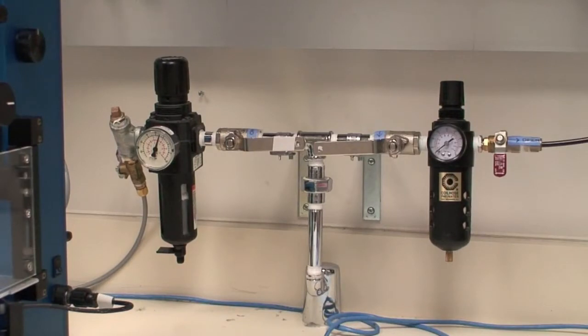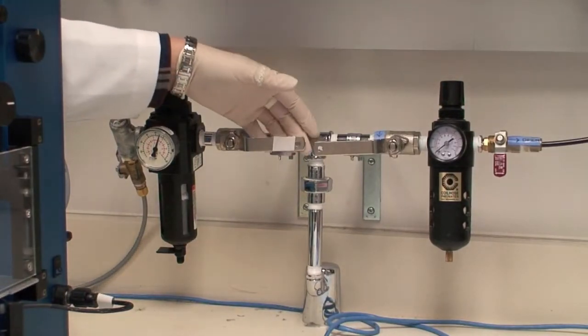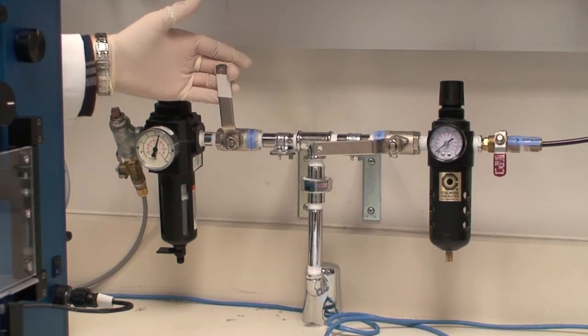Meanwhile, open both gas valves to provide pressure to apparatus in order to blot your grid.